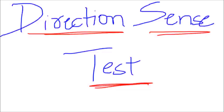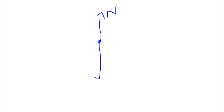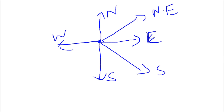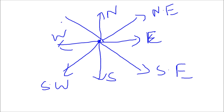Before the trick, let me quickly introduce you to the directions. Suppose this is the place from where you are starting. When you move upward, that is North; downward is South; towards the left is East; and towards the right is West. Northeast, Southeast, Southwest, and Northwest are the diagonal directions.